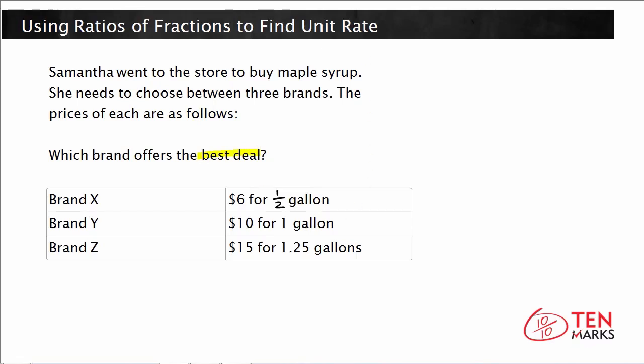Now what you want to figure out is which brand offers the best deal. To find the best deal, you need to find the brand that has the lowest cost per gallon. To find this cost per gallon, we're going to calculate something called the unit rate. The unit rate is a ratio that compares two quantities.